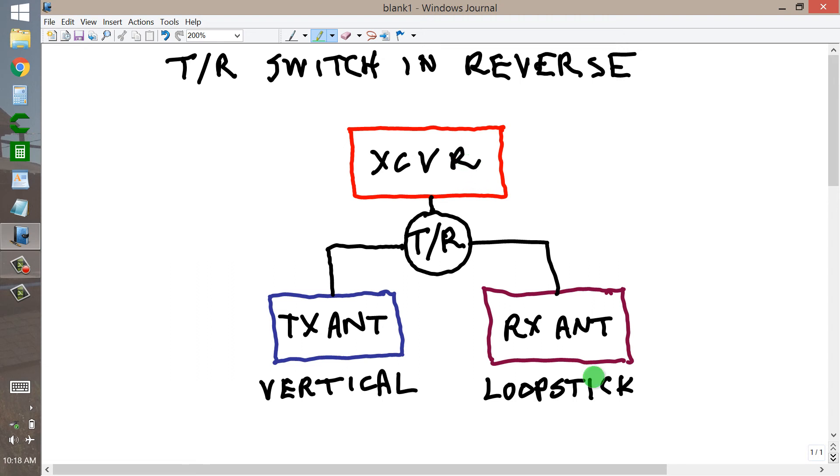Normally, when you're receiving, the loop stick goes through the TR switch straight to the transceiver and the transmitter doesn't interfere at all. These are still coaxial interconnections. But as soon as you transmit.